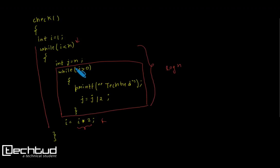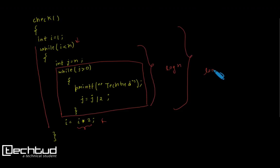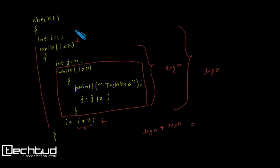Since the inner loop executes log n times and the outer loop also executes log n times, the total number of times printf executes is log n × log n. Therefore the complexity of this function is O(log²n), i.e., O(log n) squared.